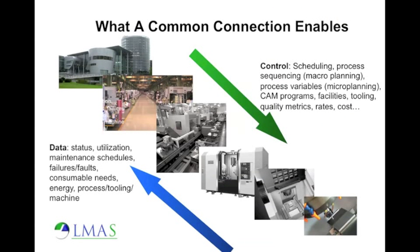Here's a more detailed slide from our friends at Berkeley showing all the different things you can start doing with manufacturing equipment. Looking at it from a high level: data — you want to get status, utilization, maintenance schedules, failure, faults, consumables, tooling, process, and energy. And control — scheduling, process, the CAM side, facilities, tooling. When information is in an easy-to-read format, it makes it exponentially easier to make all of this just happen. MTConnect is the protocol that allows these different types of data and control functions to happen — because when you have this common connection, everyone can start sharing that information.